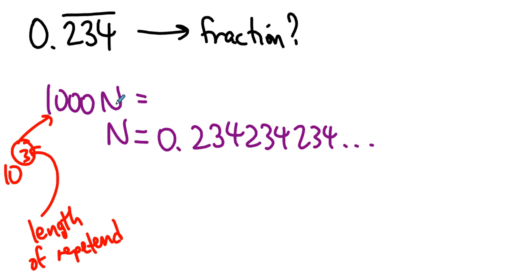Well, what's 1000n? Move the decimal point three places to the right. That's 234.234234234. It just repeats forever. So we know what our number is, and we know what 1000 times our number is.